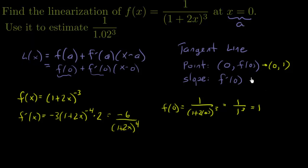And then the slope, well now we can just evaluate it, so we can come down here. f prime of 0 is going to be negative 6 over (1 plus 2 times 0) to the 4th. That's going to be negative 6 over 1 to the 4th, that's just negative 6.